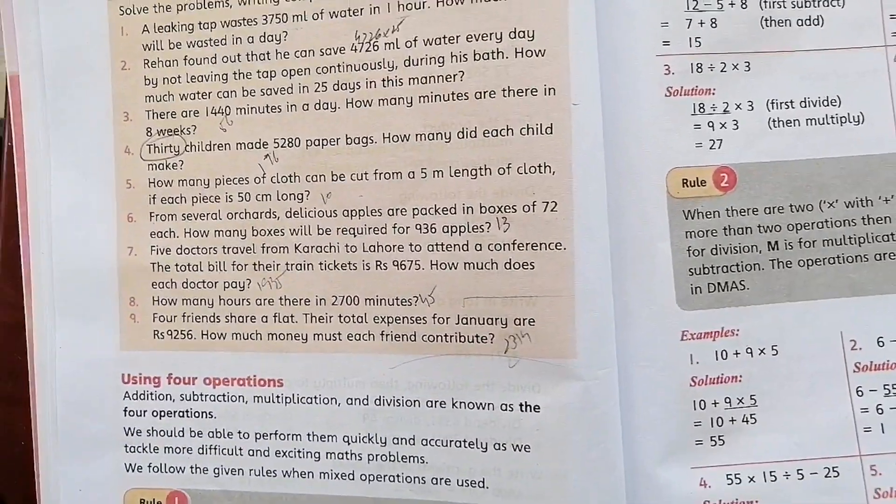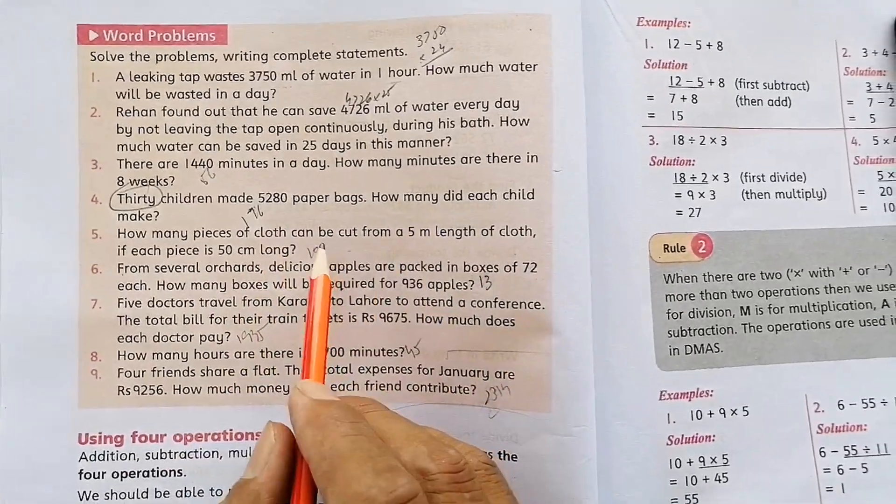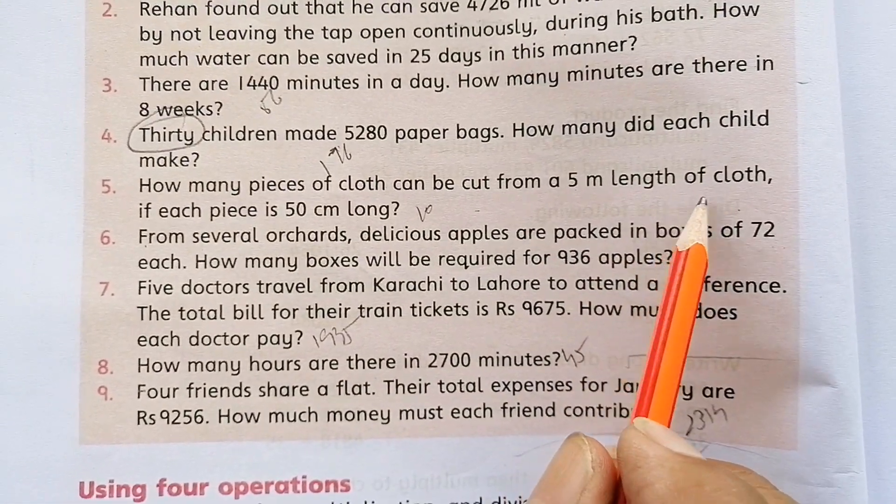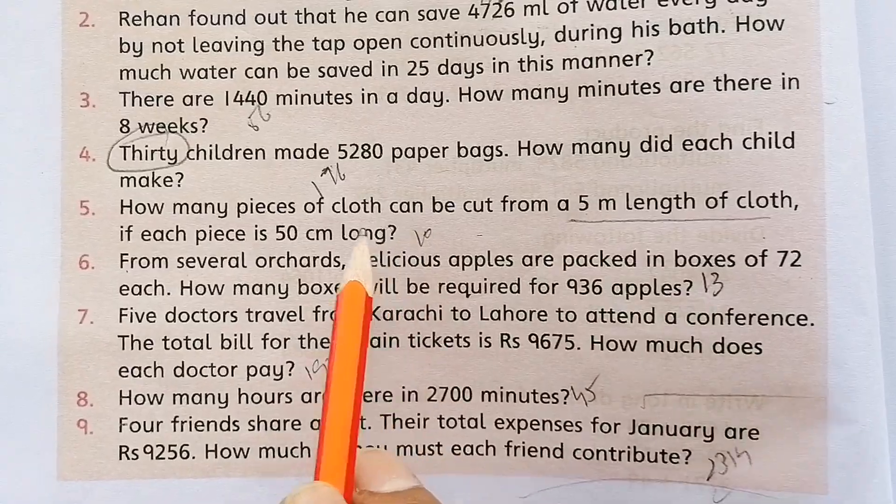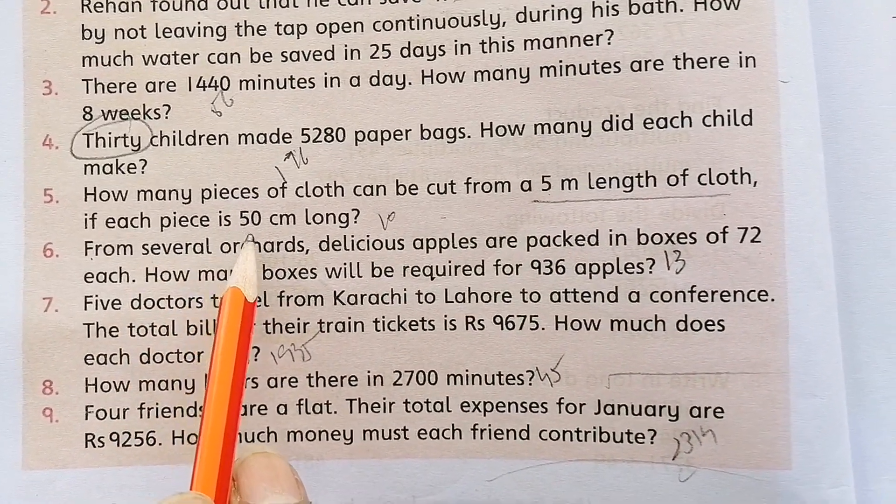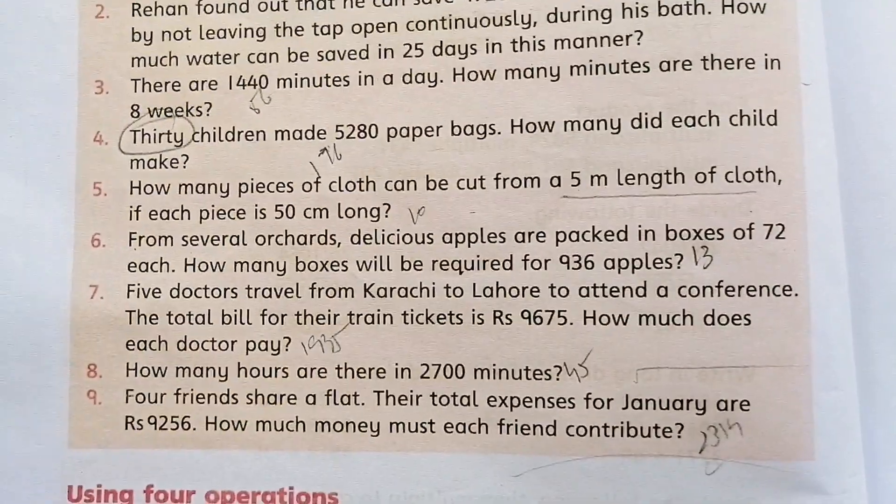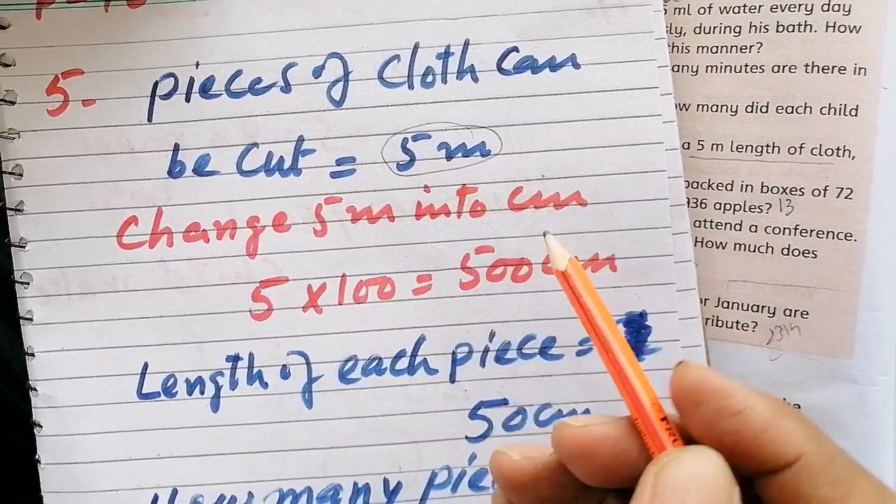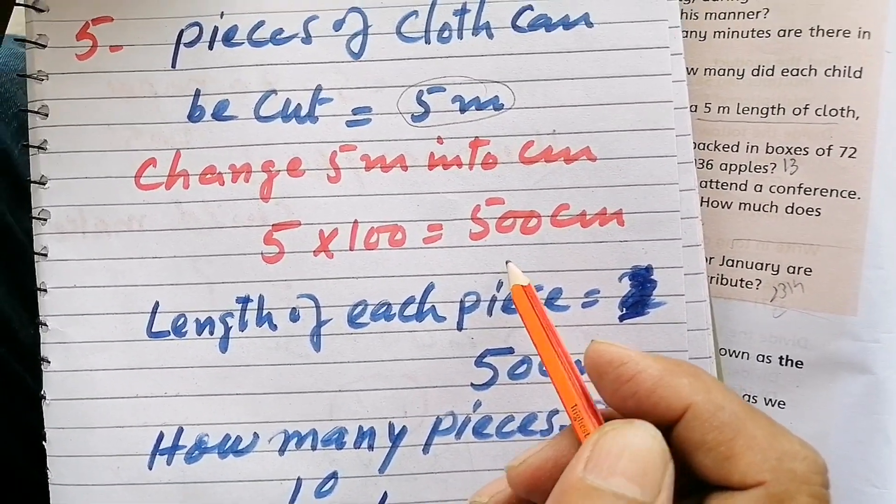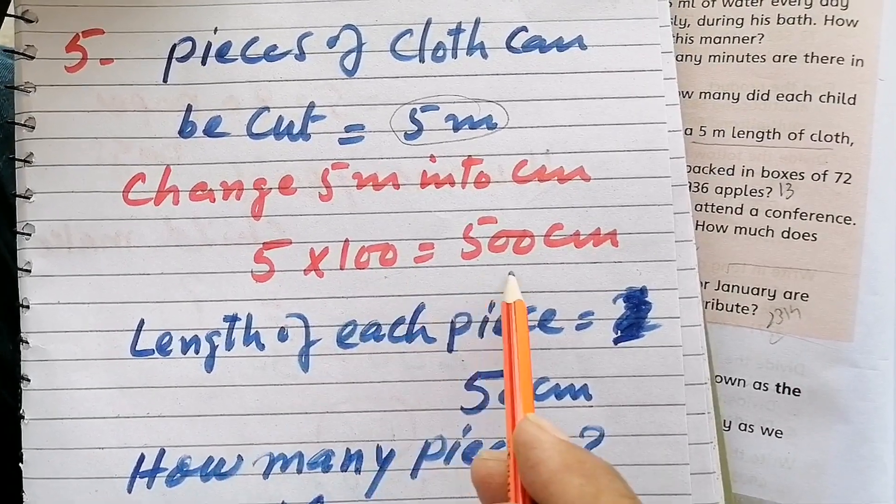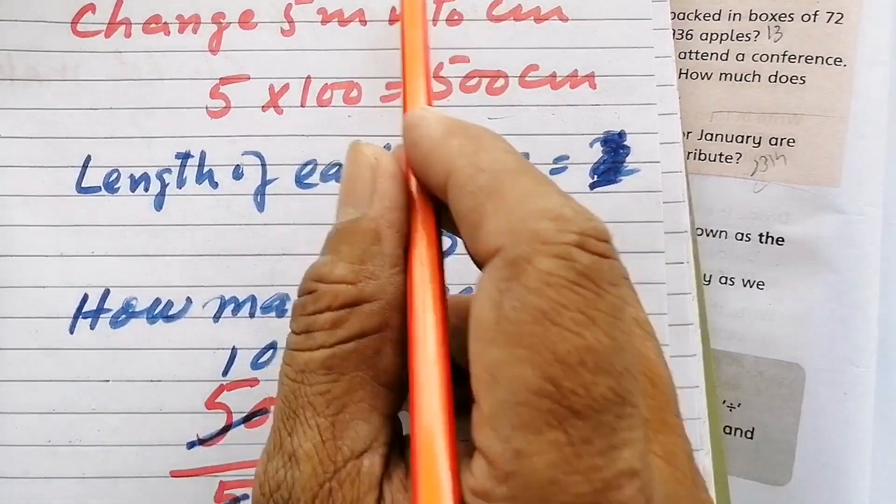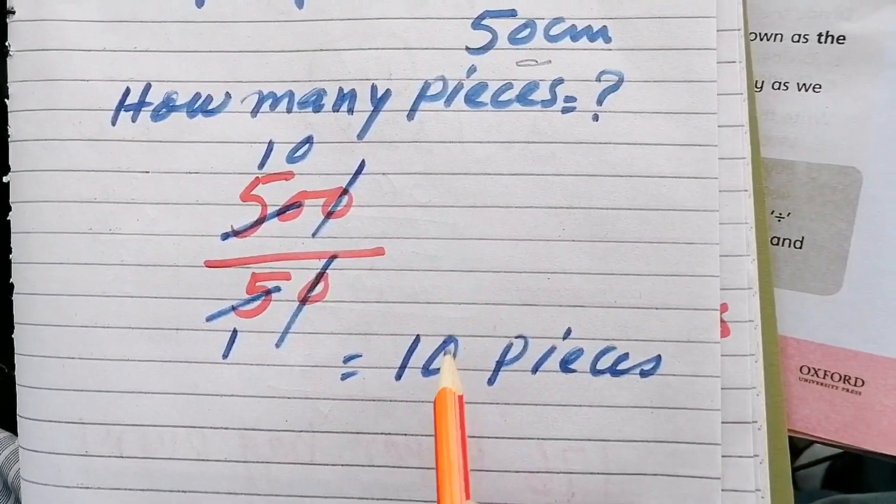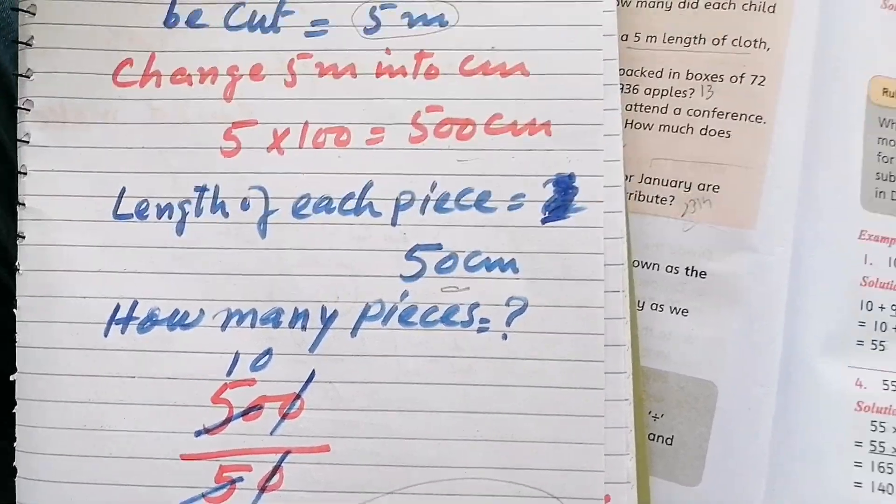Question number five: How many pieces of cloth can be cut from a 5 meter length of cloth if each piece is 50 cm long? First convert 5 meters to centimeters: 5 times 100 equals 500 cm. Then divide 500 by 50 to get 10 pieces.